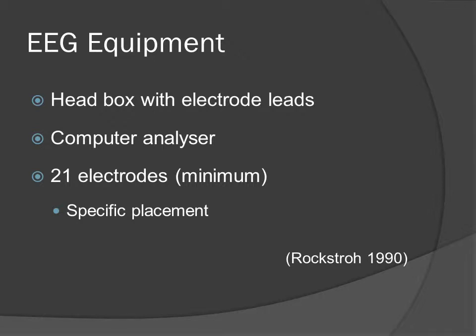So how is an EEG performed? The EEG is a machine consisting of numerous electrodes and leads that are attached to a head box, which feeds the electrical information into the neurophysiologist's computer. Usually a minimum of 21 electrodes are used and they are placed in specific arrangements.